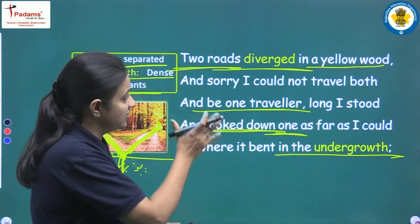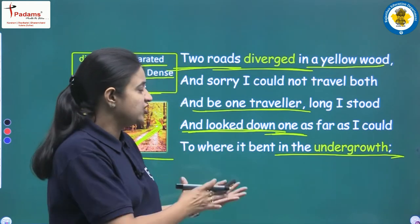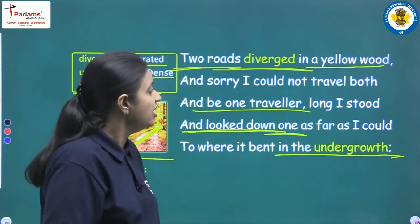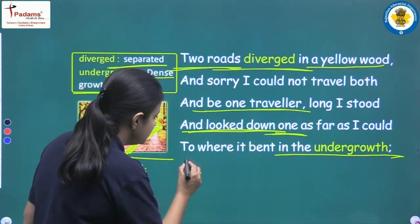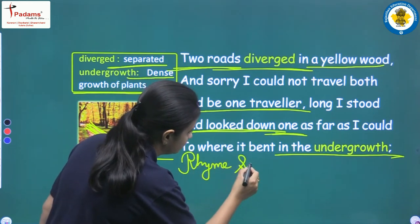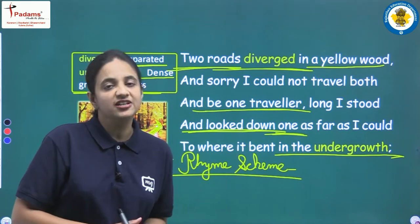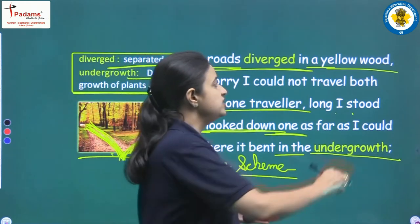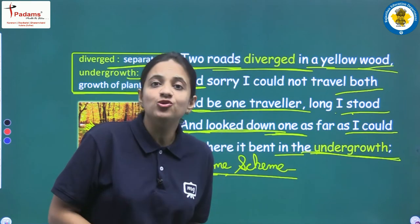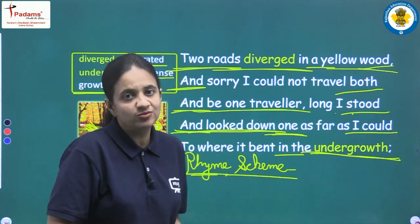Now let us discuss the literary devices in the first stanza. First is rhyme scheme. To identify rhyme scheme, we look at the last word of each line and compare their sounds. The first word is 'wood' — a new sound — so we mark it A.